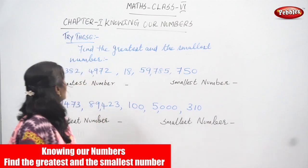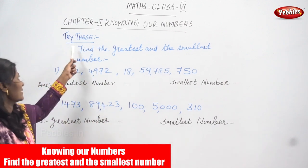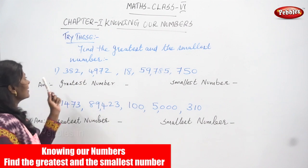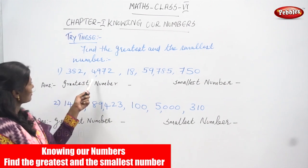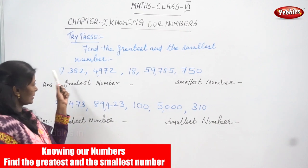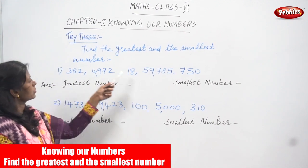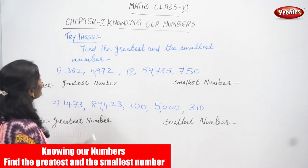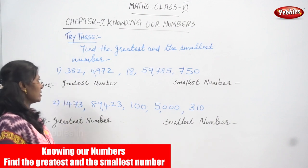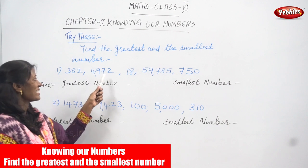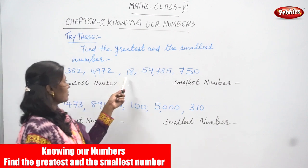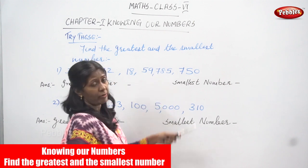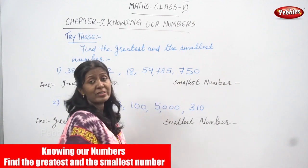Now, we are going to see this 'try these' exercise: find the greatest and the smallest number. The first question has 5 numbers given: first number is 382, second number is 4,972, third number is 18, fourth number is 59,785, and the last number is 750.